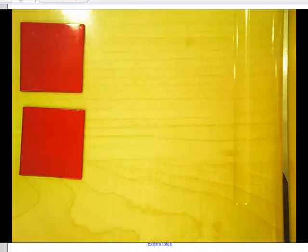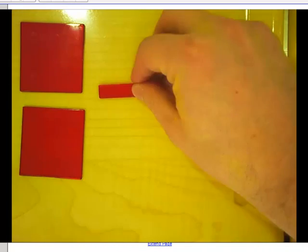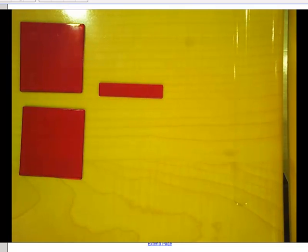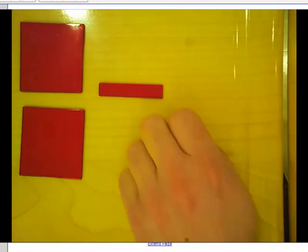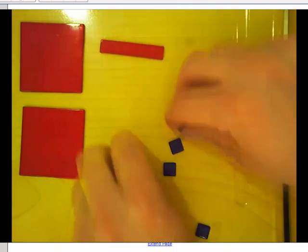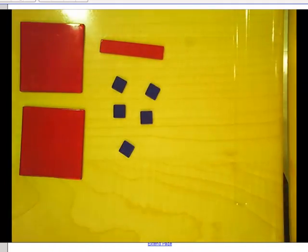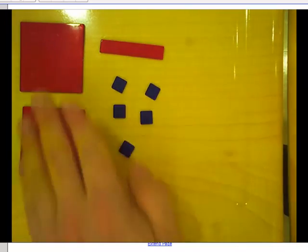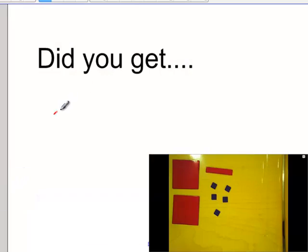Here's a challenge for you. If I lay out some tiles, can you tell me what that situation would represent as an algebraic expression? Take a second to do that. So I laid out two x squared tiles and one x tile and five blue units, negative five. Did you get the expression x squared plus x minus five?